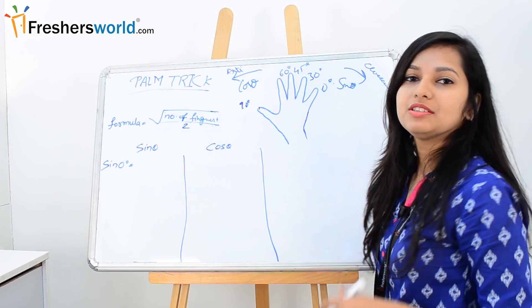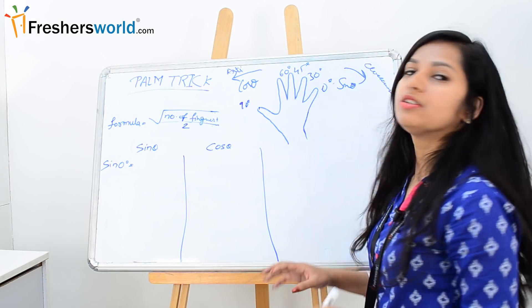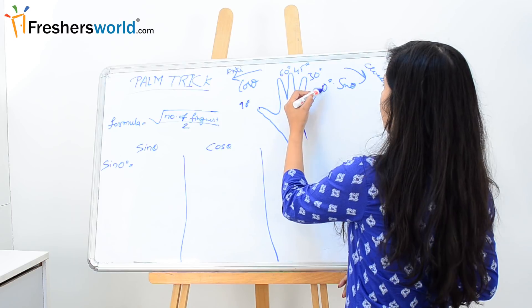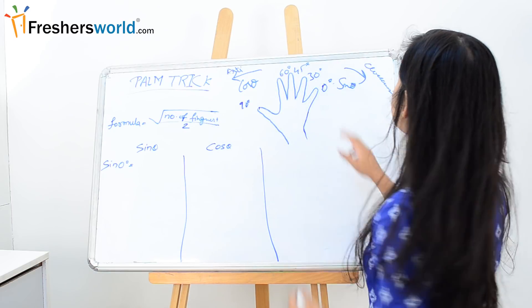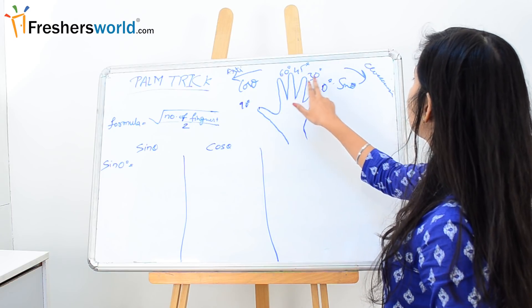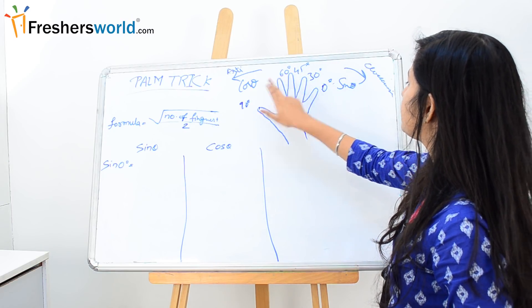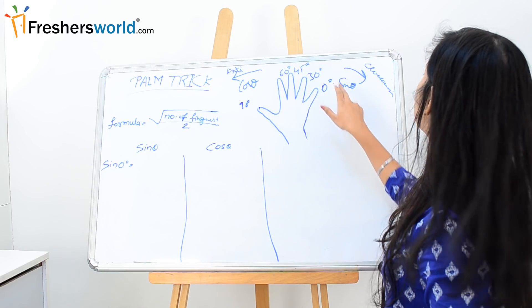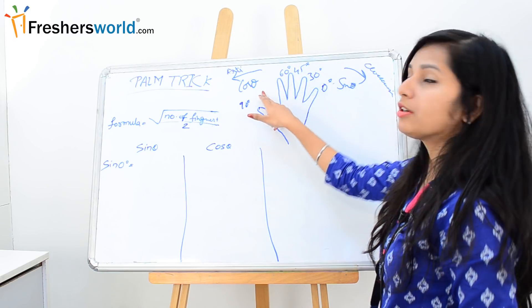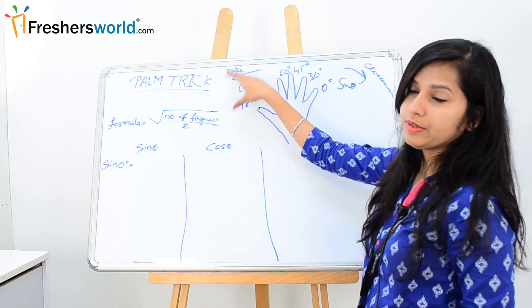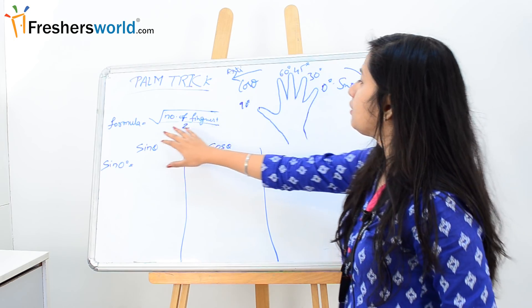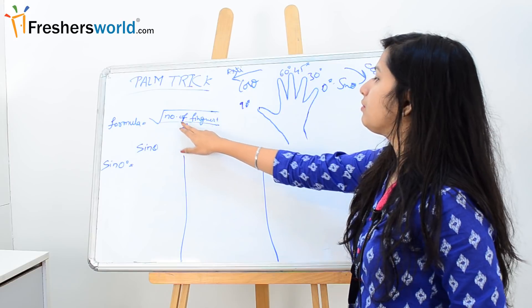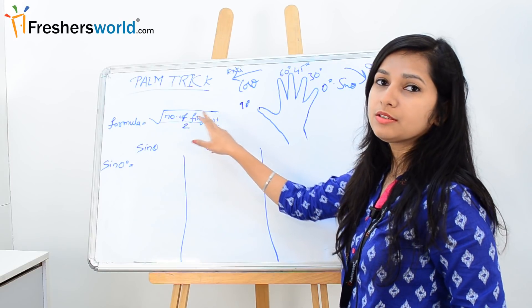For this trick, all you have to do is draw your palm and write down angles on your fingertips. We will start from 0, 30, 45, 60, and 90 degrees. For sin theta we will be moving clockwise, and for cos theta we will be moving anti-clockwise. The formula for the palm trick is: root over of number of fingers, divided by 2.